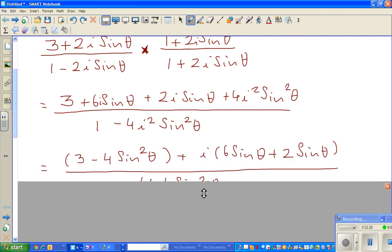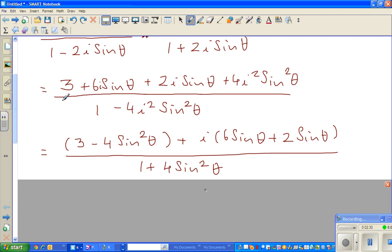Now group the real and imaginary parts separately. This is 3, and this becomes negative 4sin²(θ) because i² = -1, so 4i²sin²(θ) becomes -4sin²(θ). This becomes (3 - 4sin²(θ) + 8i·sin(θ))/(1 + 4sin²(θ)).